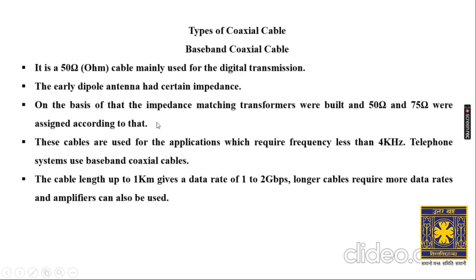There are two types of coaxial cable: baseband and broadband. Baseband coaxial cable is a 50-ohm cable mainly used for digital transmission. The impedance value of 50 ohm was assigned based on early dipole antenna impedance matching transformers. These cables are used for applications requiring frequencies less than 4 kilohertz. Telephone systems use baseband coaxial cables, and cable lengths up to 1 kilometer give a data rate of 1 to 2 Gbps. Longer cables require amplifiers.